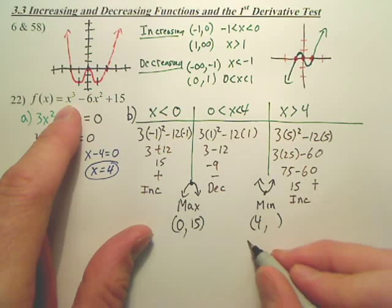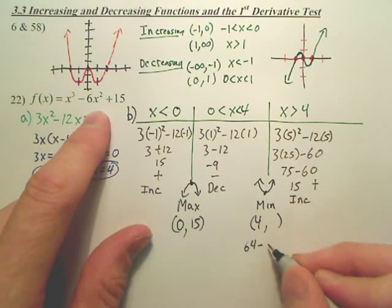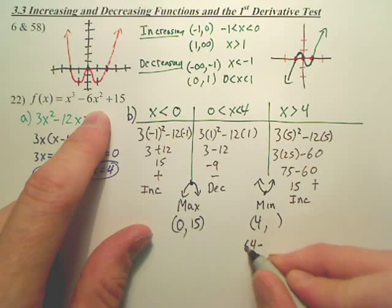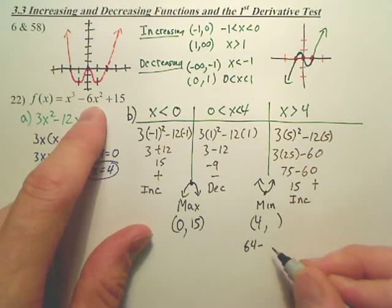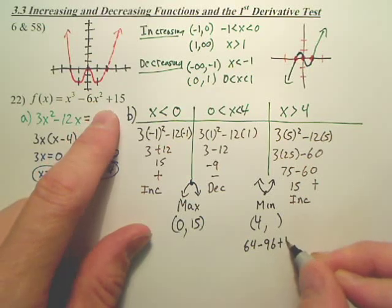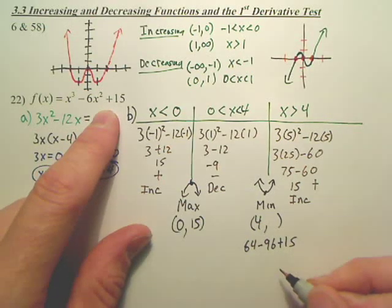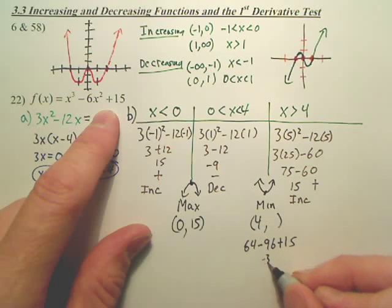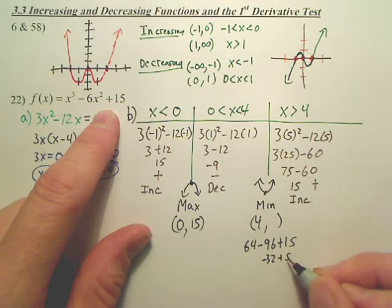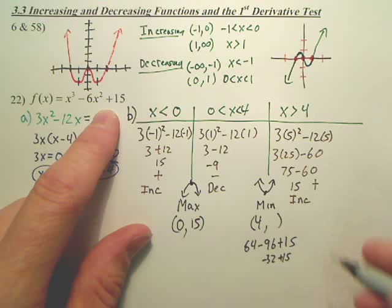Four to the third. Is that 64? Minus six times 16. Anybody know that? Six times 16, right? Is that 96? Yeah. Plus 15. So, wait, 96 minus 30. Is that 32? Negative 32. Negative 32 plus 15 is negative 17? Is that good?